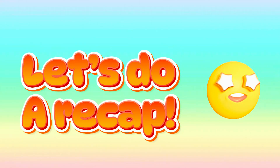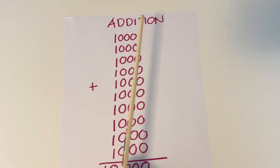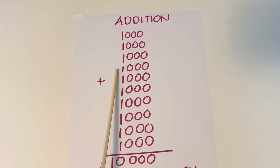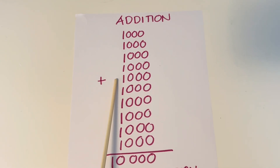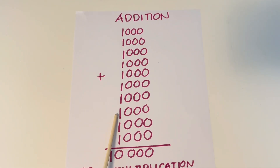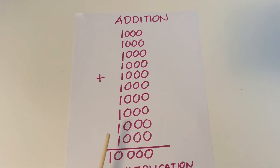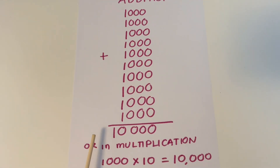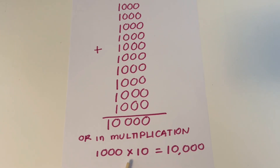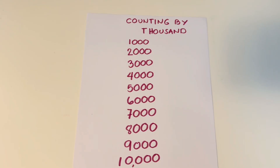Let's do a recap. Let's start with addition: 1,000 plus 1,000 plus 1,000 plus 1,000 is equals to 10,000. Or in multiplication, 1,000 times 10 is equals to 10,000.